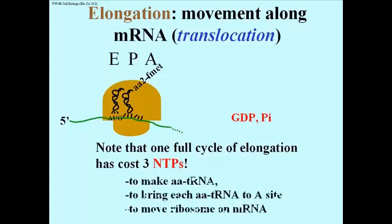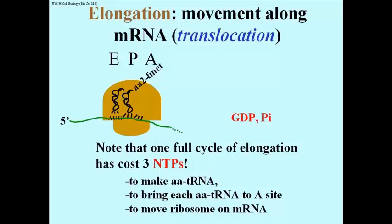Here they are. You need an ATP to stick each amino acid onto its tRNA, catalyzed by aminoacyl-tRNA synthase. You need a GTP to bring each aminoacyl-tRNA to the A site when the A site is finally freed up after a translocation.